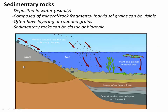The second category is sedimentary rocks. These are deposited in water and are usually composed of mineral or rock fragments that have been worked in a river, a lake, or an ocean. Specifically, you can usually see individual sand grains or pebbles within a sedimentary rock. They'll often have layering where different depositional pulses of sediment came into the water and accumulated as layers under the water.